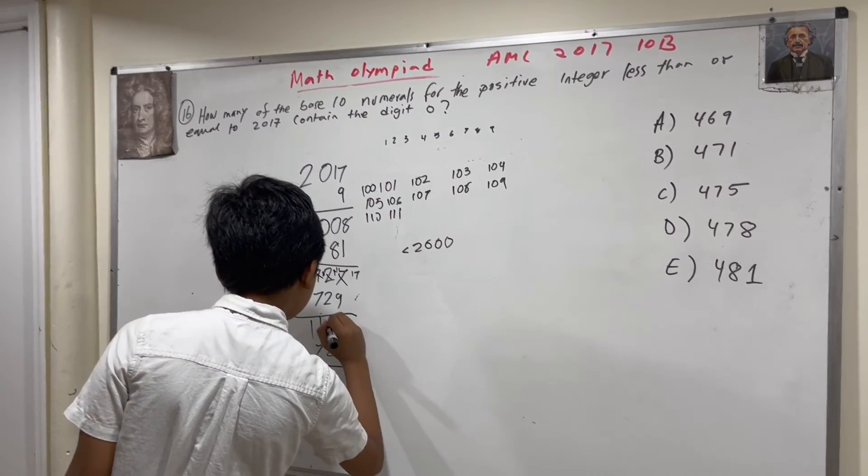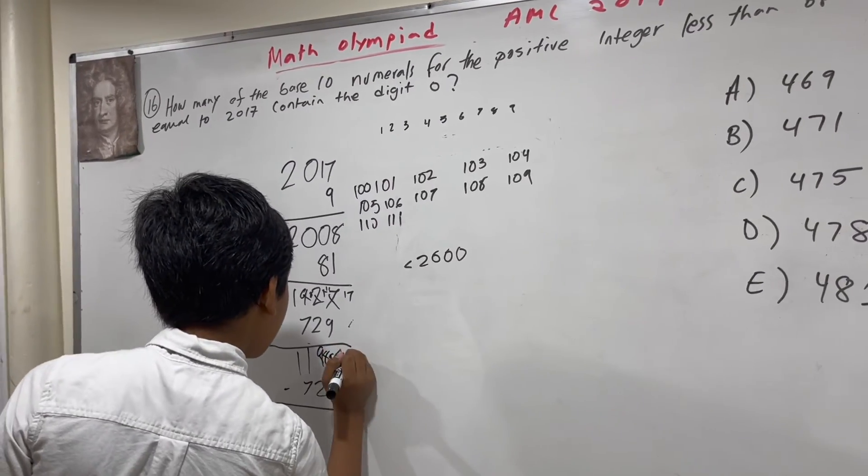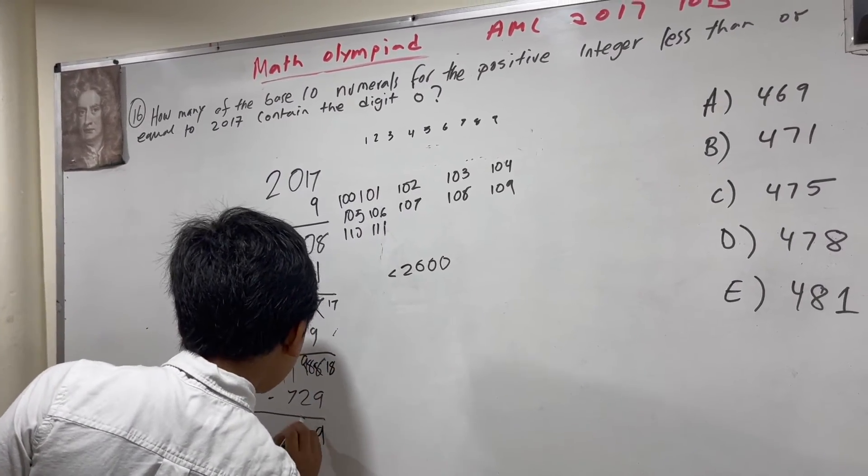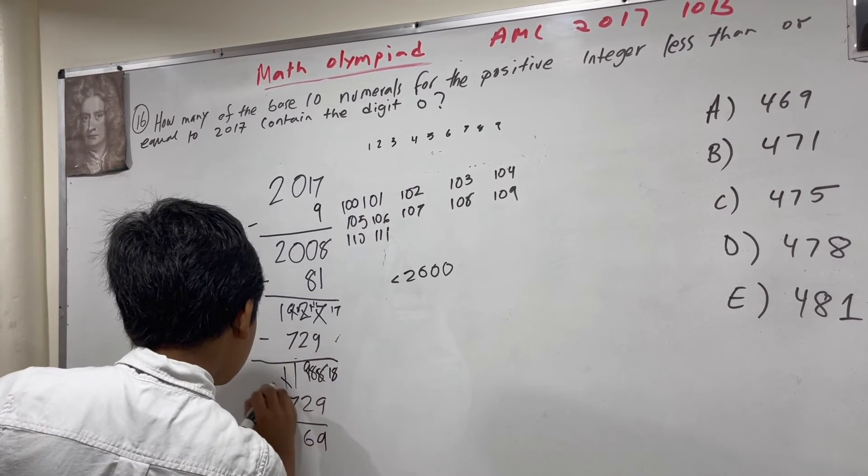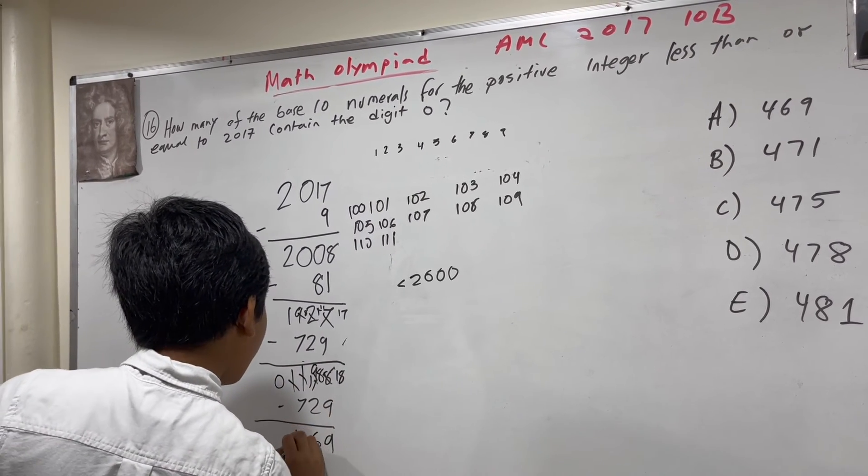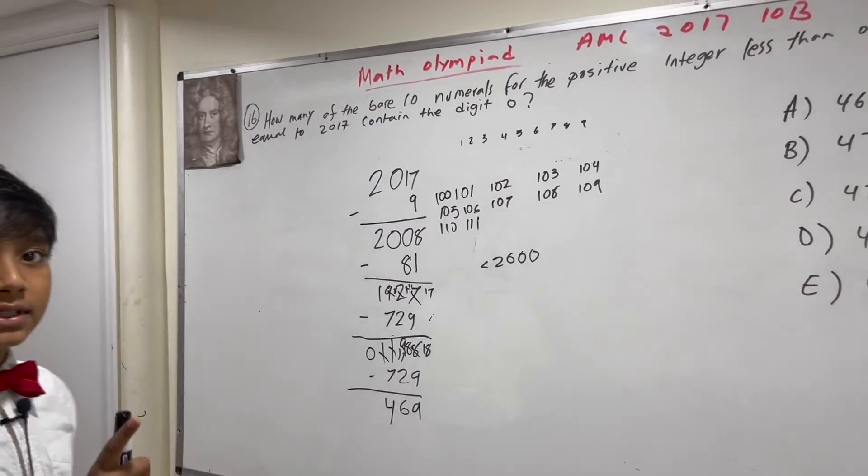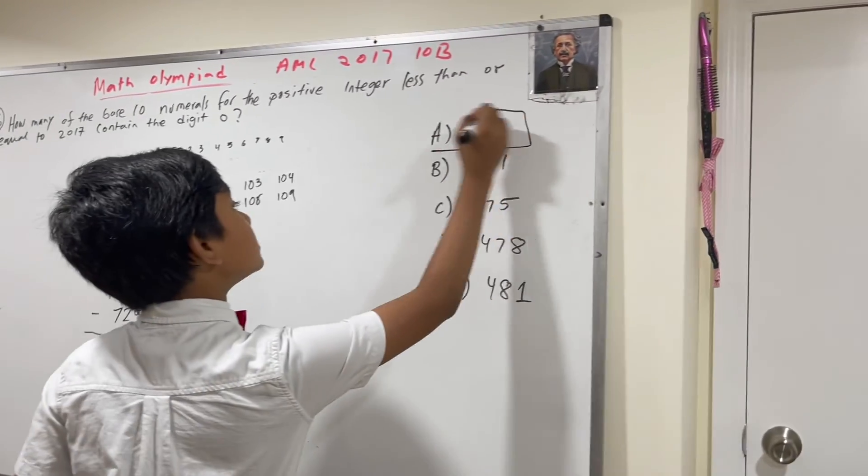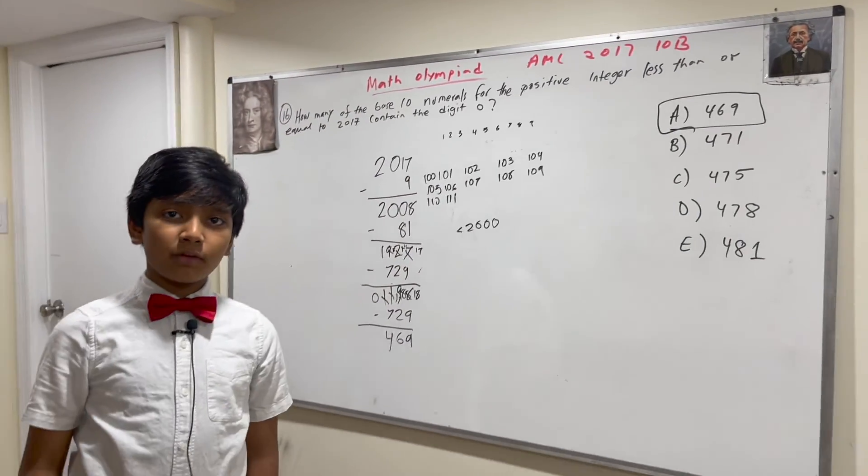So, we're going to subtract here. 8, 18, 9, 6, 11, 4. 469 remain, which makes the answer A. Thank you, everybody, for watching.